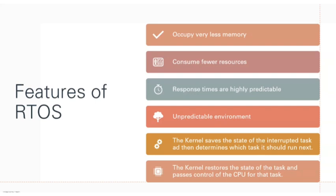Let us move on to the features of RTOS. The first feature is that it occupies very less memory and consumes fewer resources. Response times are highly predictable because every task has a deadline — by summing the deadlines you can find the response time of a project. The environment can be unpredictable sometimes. The kernel saves the state of the interrupted task, determines which task should run next (context switching), then restores the state of the task and passes control of the CPU to that task.